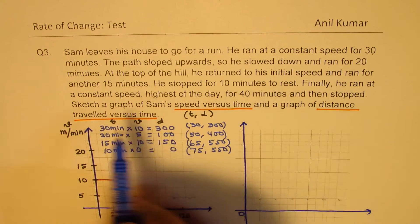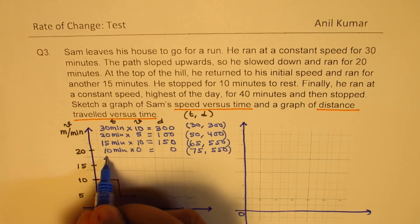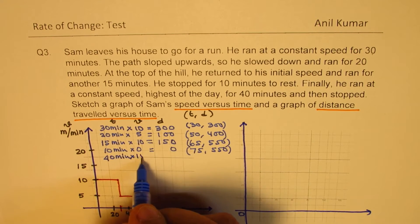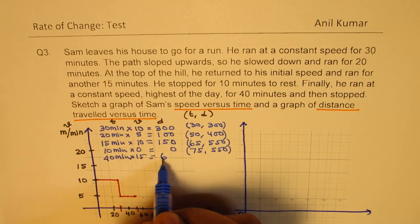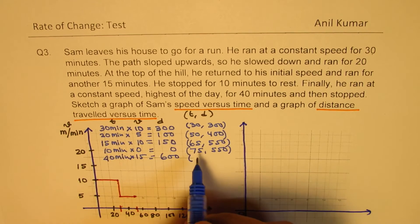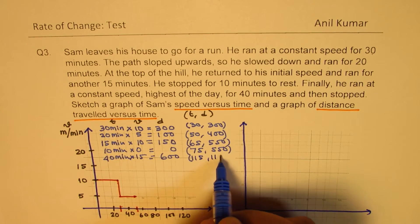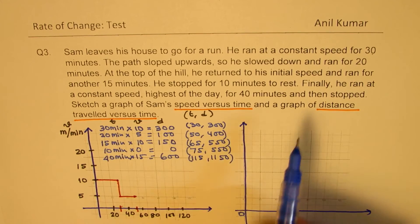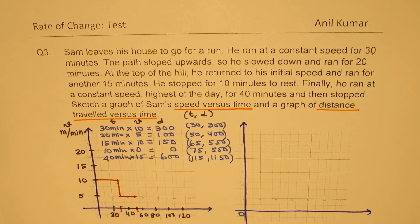Finally, he ran at a constant speed highest of the day for 40 minutes. So for 40 minutes highest of the day. So let's make it 15 and when you multiply 40 by 15 you get 600. So you'll add 40 to this. So 40 means 115 and 600 means 1150. So that becomes the time and then stopped and then that remains constant.